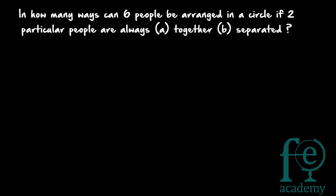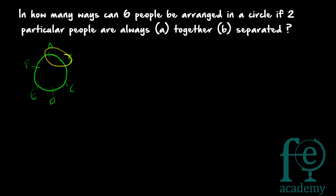Part A: arrange 6 people — A, B, C, D, E, F — so that 2 particular people are always together. Taking A and B as always together, treat them as a single unit. Now you have 5 units to arrange in a circle. These 5 units can be arranged in (5−1)! ways, and the 2 people within the unit can be arranged in 2 ways.